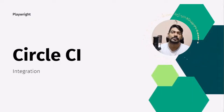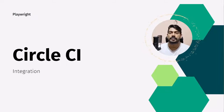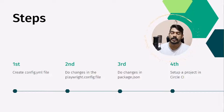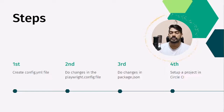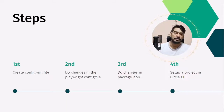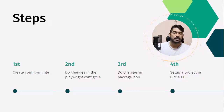Hey guys, my name is Kaushik and welcome back to LitCode. In this video we are going to learn how to run our test script in the CircleCI pipeline. We have four steps: create a configuration file config.yaml, make some changes in the Playwright config file, update package.json, and set up the project in CircleCI. Let's get started.